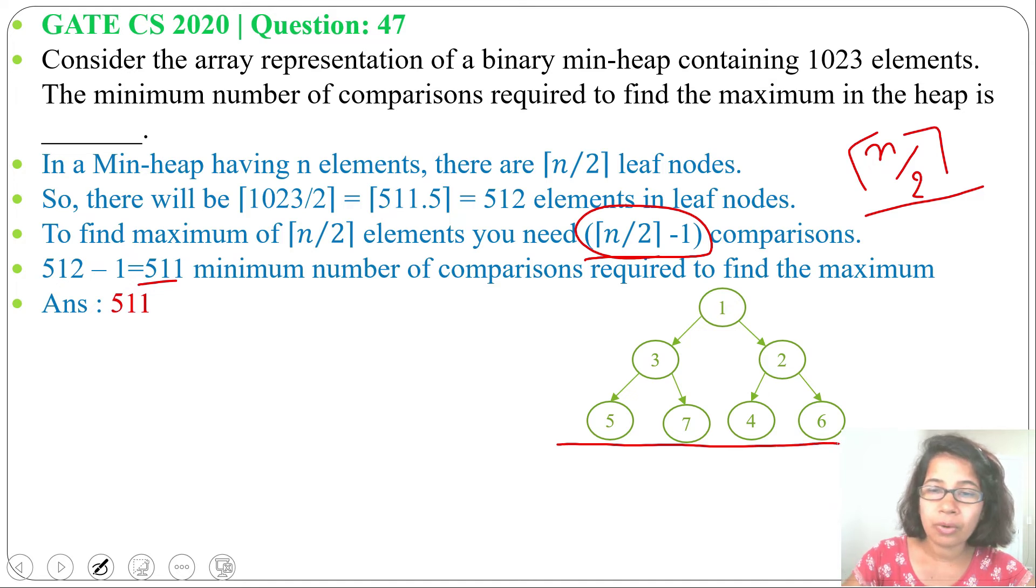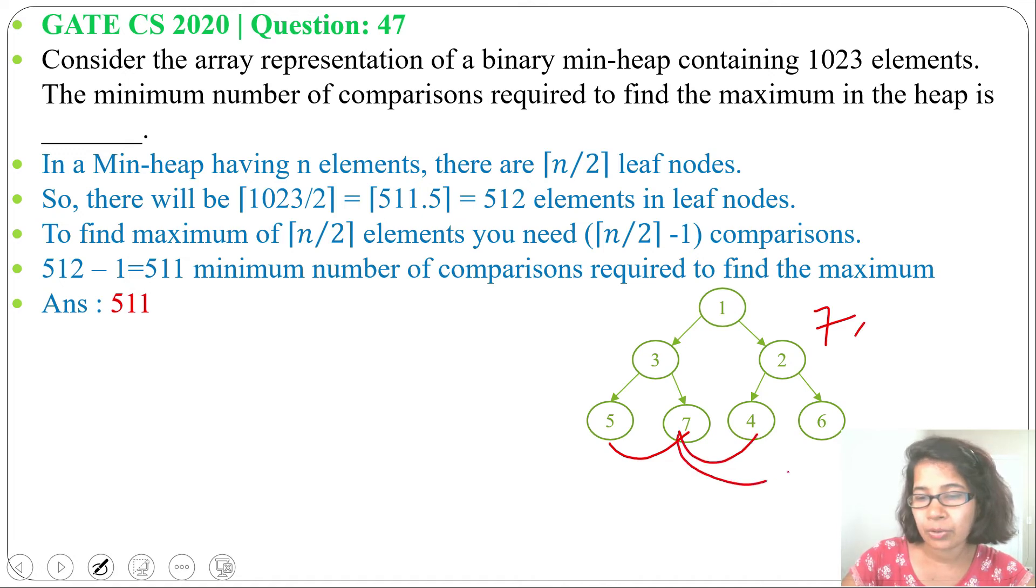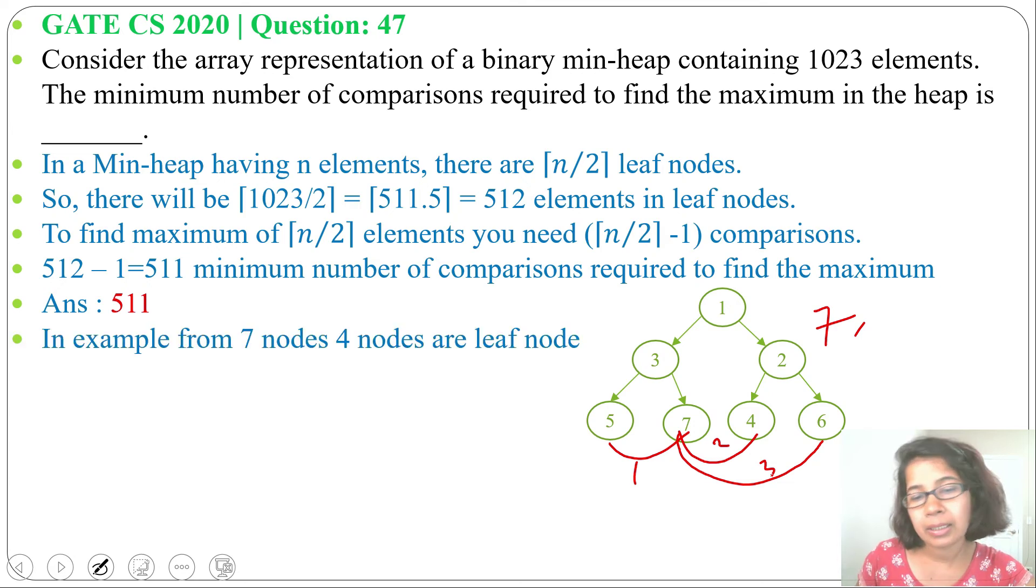Now, from that 4 leaf to find the maximum, how many comparisons are required? So, first, we will compare 5 and 7, 7 is maximum. Next, we will compare 7 and 4, 7 is maximum. Next, we will compare 7 and 6, 7 is maximum. So, there are 1, 2, 3. For 4 elements, there are 3 comparisons.